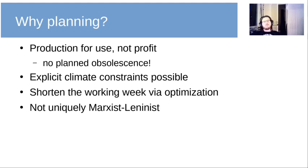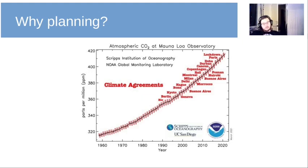We can also do optimization on the entire system, which allows us to do things like shortening the working week. I'll also note that this is not a uniquely Marxist-Leninist notion — I've been trying locally to get anarchists and social democrats to look into this kind of stuff, because it's important. The reason it's important is that the amount of carbon dioxide in the atmosphere keeps going up despite climate agreements. The first agreement here is the Rio Agreement in 1993, and we're not doing better — we're, in fact, doing worse. And this is the market in action.